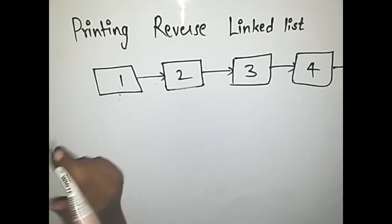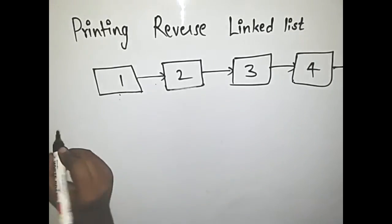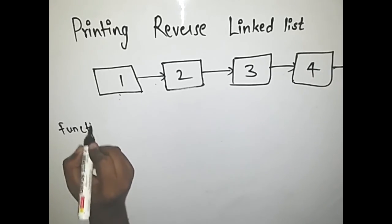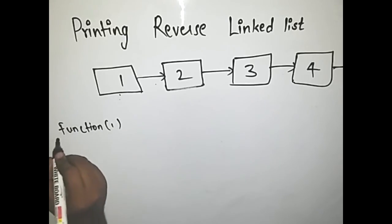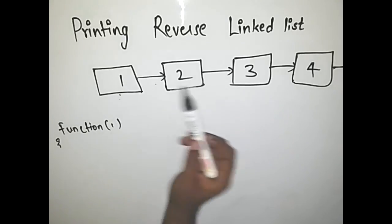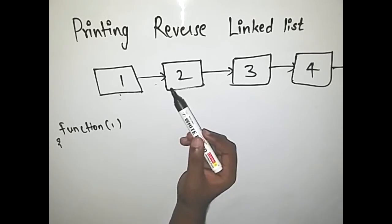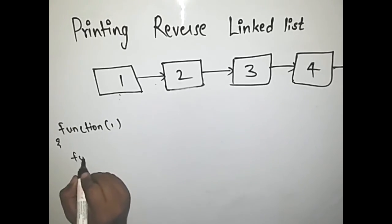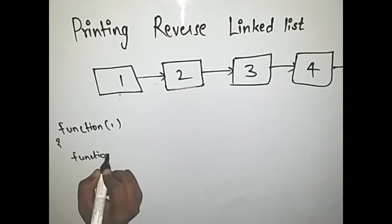Let's name these nodes 1, 2, 3, and 4. Suppose in the beginning we call the first node. What it does is it checks if the next of the first node is null or not, and if it's not null it calls the second node, function 2.